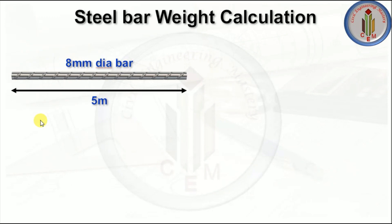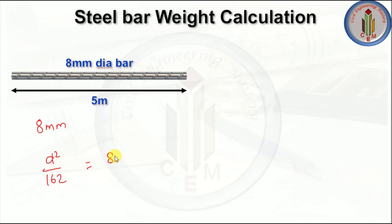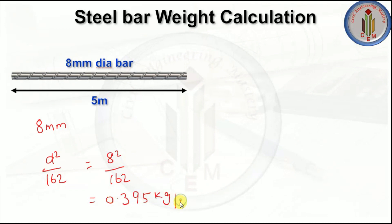Let's start with the 8 mm diameter bar. The formula to calculate the weight of the steel bar is d² divided by 162 — you have to remember this formula. Here d is the diameter of the bar and 162 is a constant. So 8² divided by 162 gives us 0.395 kg per meter.